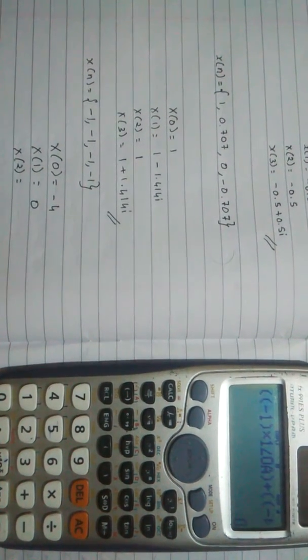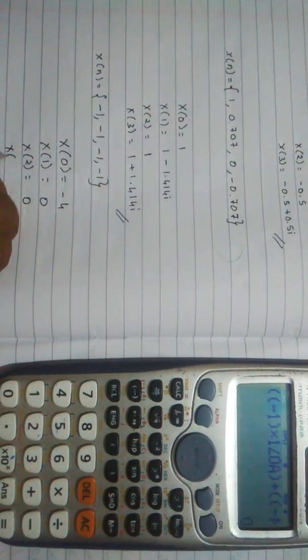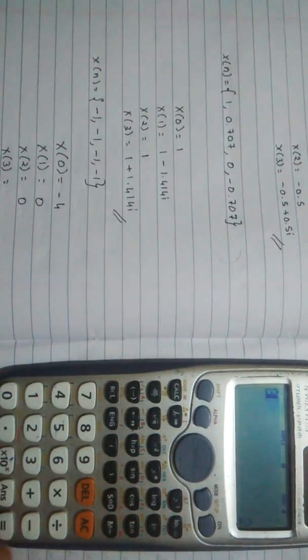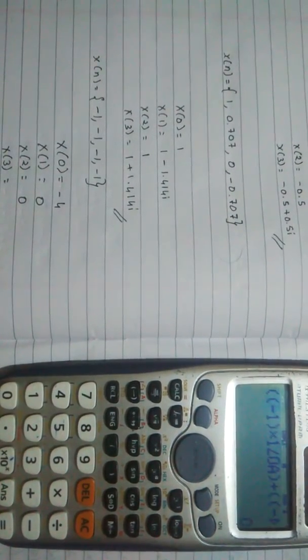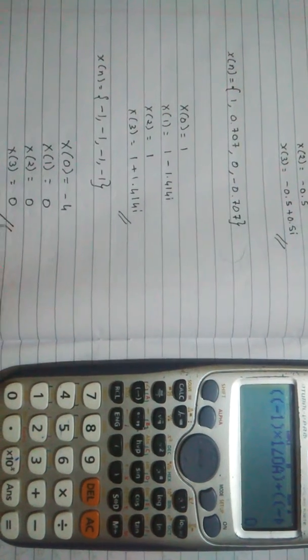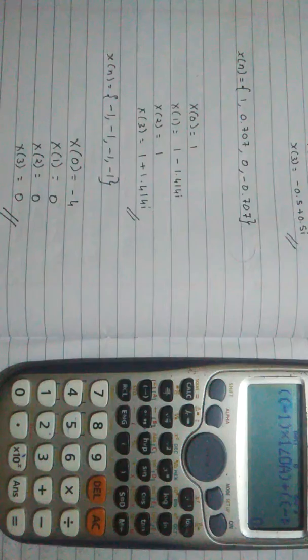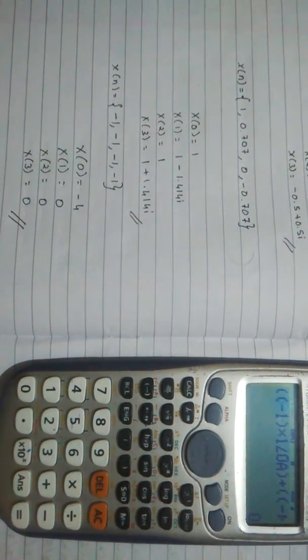So it's 0. And then x of 3 equals, hit calculate again and then 3 and then equals. So that's also 0. So this is how you calculate 4 point DFT for negative inputs. So that's all for this video, thank you.